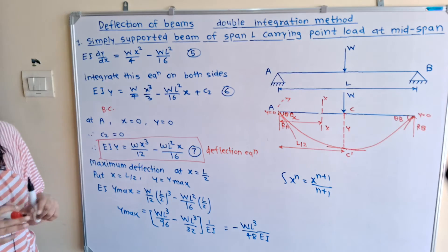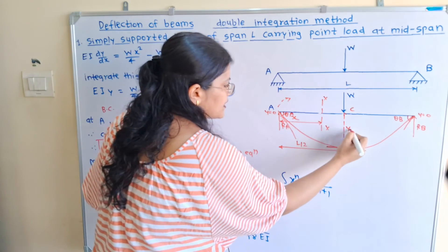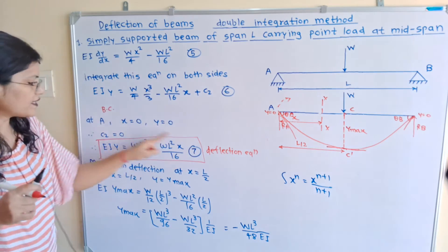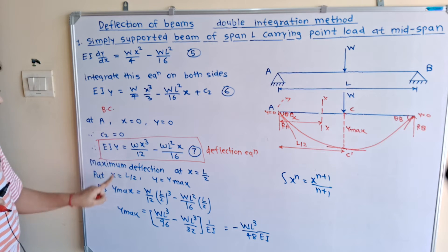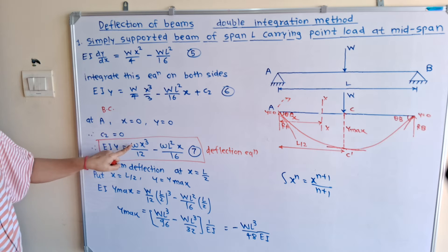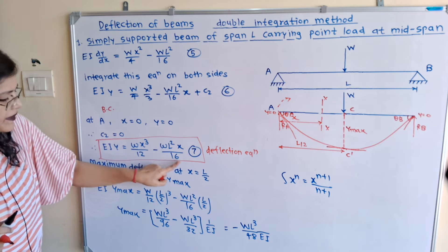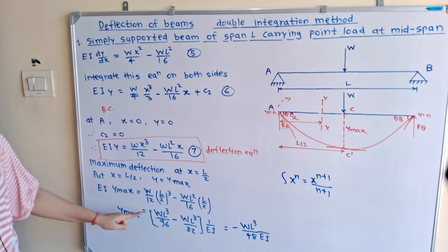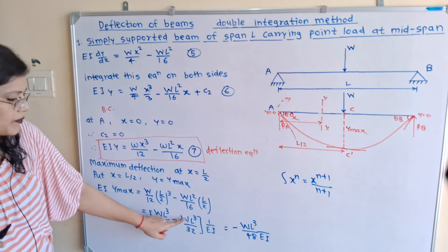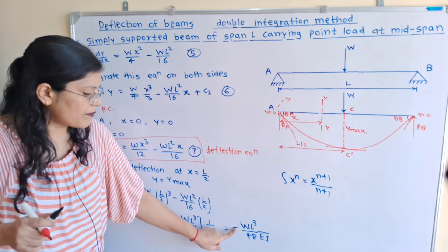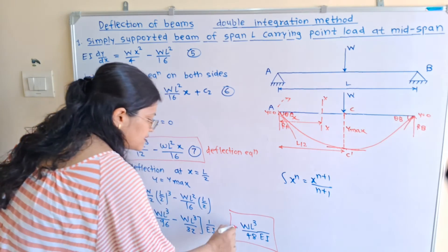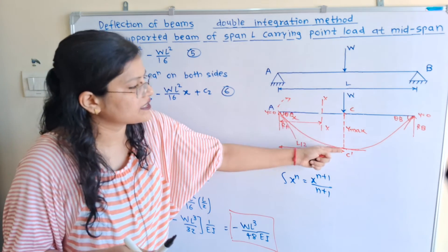For maximum deflection, at point C (mid span) X = L/2. Substituting into the deflection equation: EI·Ymax = (W/12)·(L/2)³ − (WL²/16)·(L/2). Simplifying, the denominator gives 96 and 32 respectively, both with WL³ terms. This yields Ymax = −WL³/48EI. The negative sign indicates deflection is in the downward direction.